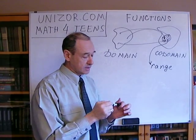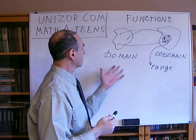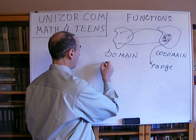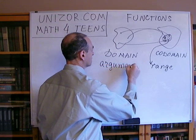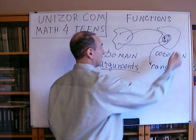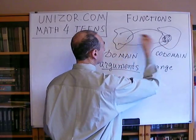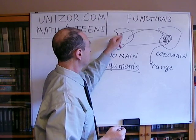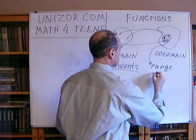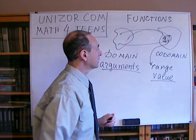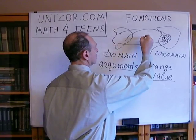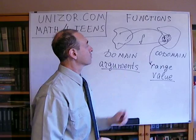The function, if you want to define it more precisely, should be defined as the combination of one set — which we call the domain — from which we take elements called arguments. Then we have another set called the codomain, and a rule which allows us, for any argument, to find the corresponding value — an element in the codomain. The range is the set of all the different values which this particular function can take. This is not a very mathematically rigorous definition, but it's an explanation which allows us to understand what a function actually is.